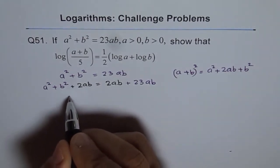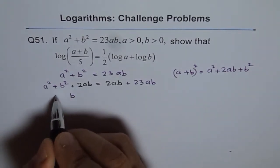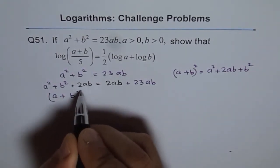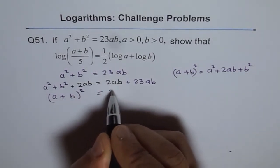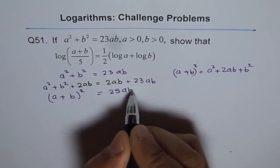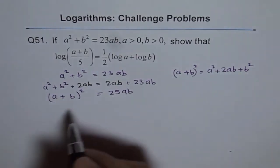Now, the left side is a plus b whole square, and the right side is 23 plus 2, so 25ab. That's what we get.